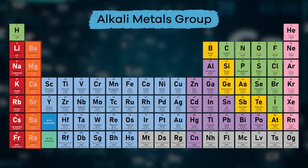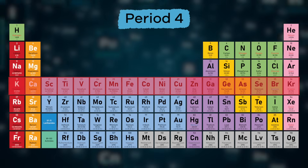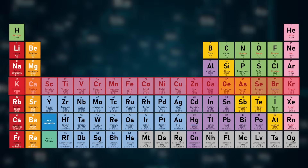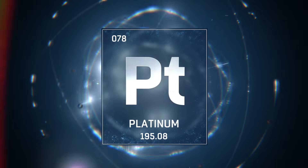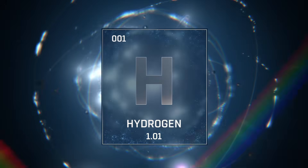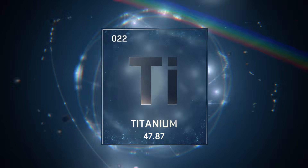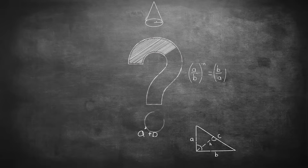If we look at the periodic table together, we can see that calcium is in the alkali metals group and can be found in period four. The best part? We can find out all of the same information for every other known element, all thanks to the periodic table.